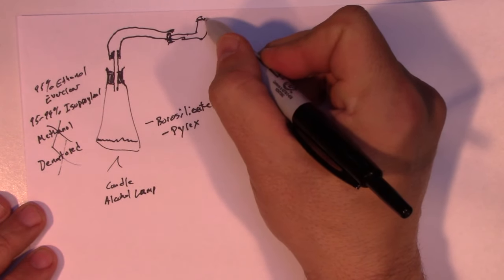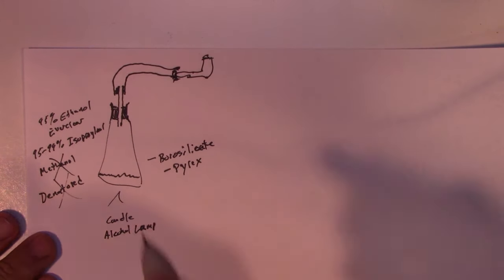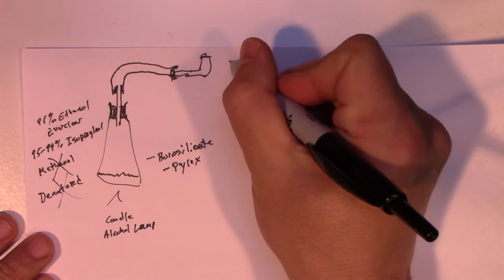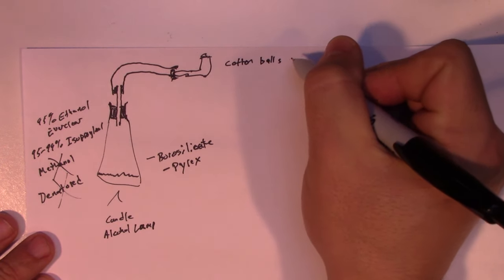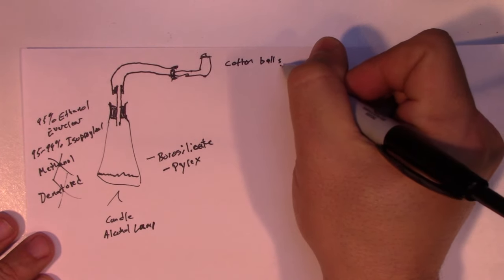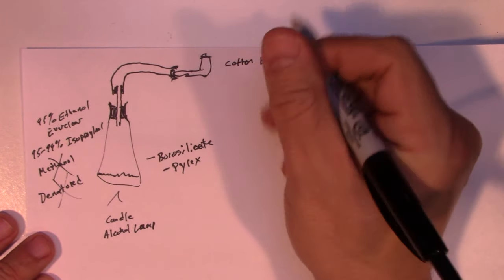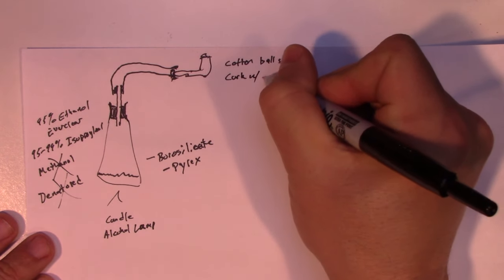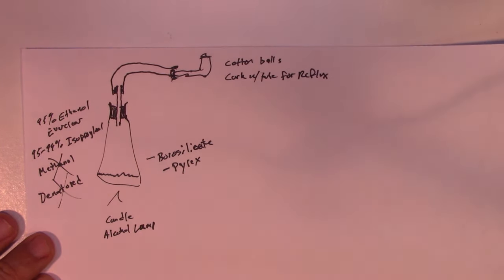Lastly we need some way to prevent the alcohol from boiling up over the top of the pipe and causing us problems with the alcohol getting on the finish. What a lot of people will do is they'll just put cotton balls stuffed into the bowl. And that works fine. I'm actually going to use a device, it's basically a cork with a tube for refluxing. So those are the basic things you need.